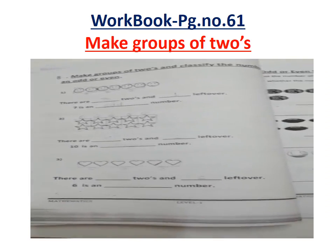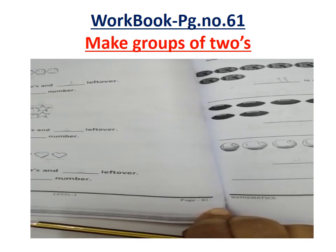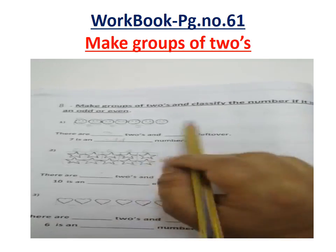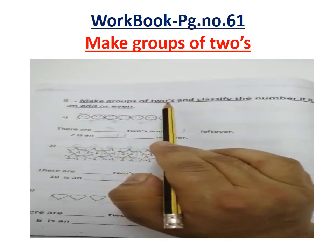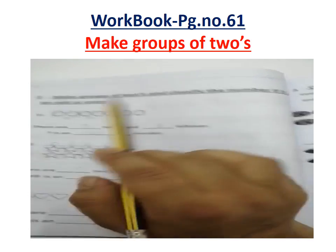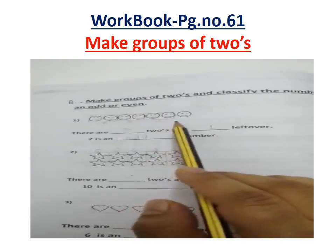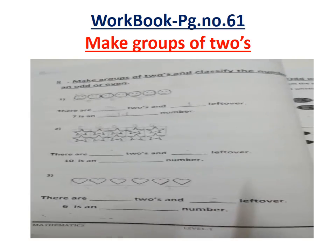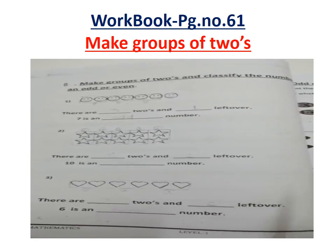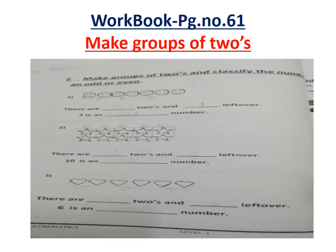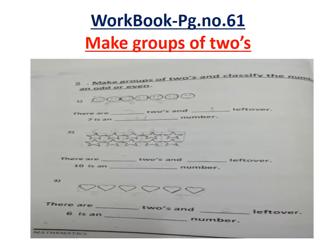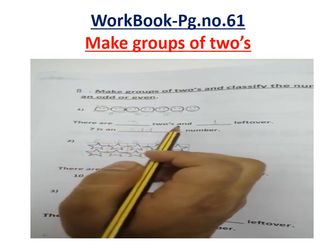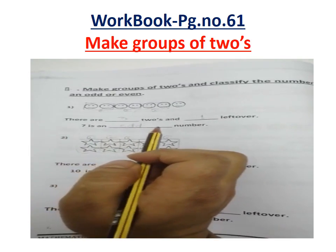Dear students, turn the page to page number 61. On page 61 you can see another question: make groups of twos and classify the number if it is odd or even. In this page, figures are already drawn. You don't need to draw any figure — only make the groups and classify which number is odd and which is even. There are dash twos and dash left over. 7 is a dash number.